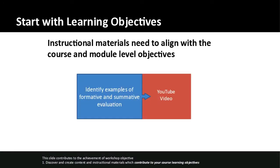One of the primary determinants of what content you choose is the learning objectives you have created. There are module-level objectives, overall course objectives, and specific objectives for particular lectures. You have to ask yourself whether the instructional materials are aligned with the course and module-level objectives. In this example, we're looking at an objective to identify examples of formative and summative evaluation, and we've found a video that does a really good job of addressing that.